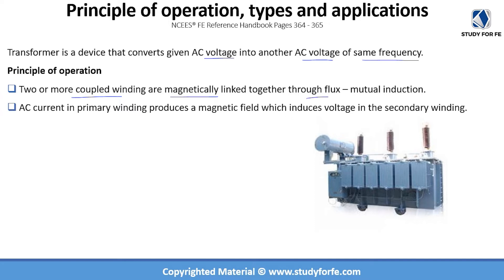They are linked through flux — the process is known as mutual induction, which is an inherent property of coils. When we discussed inductance, that's when we looked at the ability of a coil to store energy, and that's where mutual induction really comes from. AC current in the primary winding produces a magnetic field which induces voltage in the secondary winding.